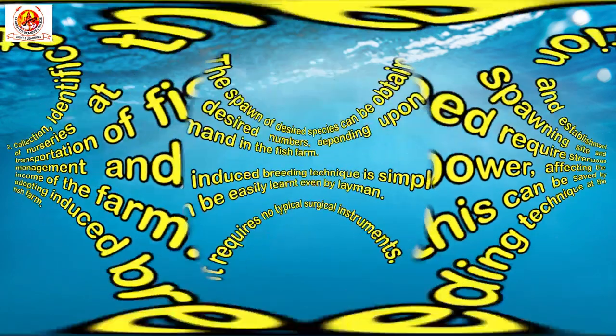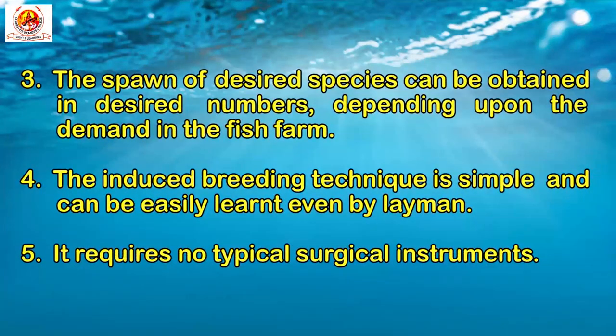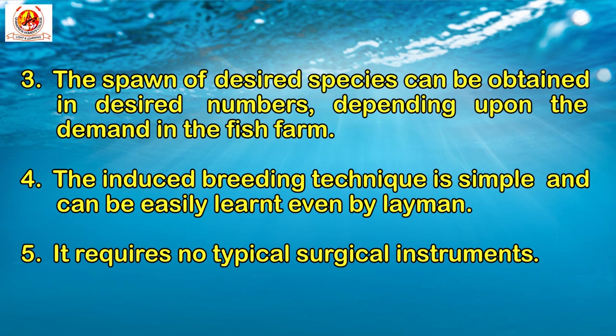Third point: the spawn of desired species can be obtained in desired numbers depending upon the demand at the fish farm. Fourth point: the induced breeding technique is simple and can be easily learned even by a layman. And the fifth point: it requires no typical surgical instrument.